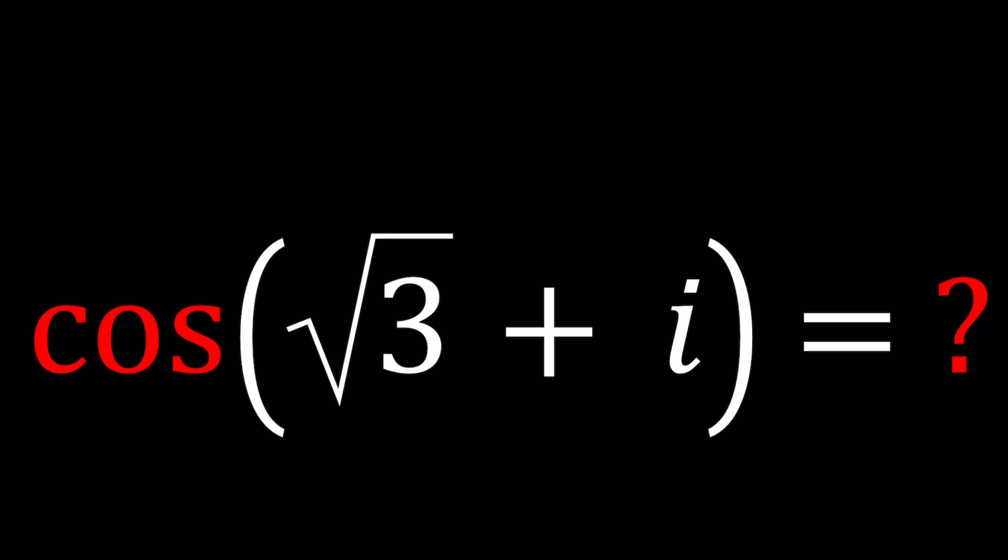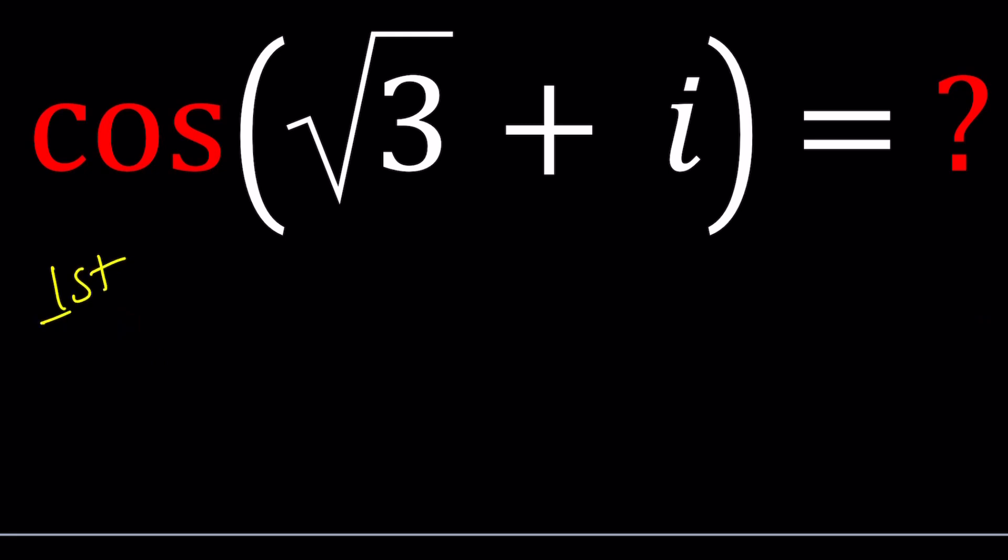So the first method is going to use a trigonometric identity. Let's start with that and then later on when we're done with both methods we can go ahead and try to compare our methods. For my first method I'm going to use an identity which is called the sum formula. In other words, cosine alpha plus beta where alpha and beta are two angles and they don't have to be real. So this is equivalent to cosine of alpha multiply by cosine of beta minus sine of alpha times sine of beta.